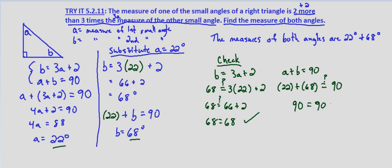In both of our equations our solutions check. So the measures of the two small angles in our right triangle are 22 degrees and 68 degrees.